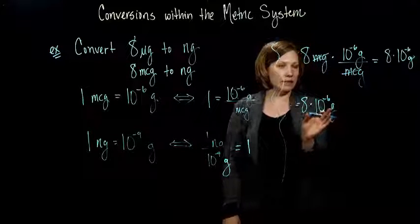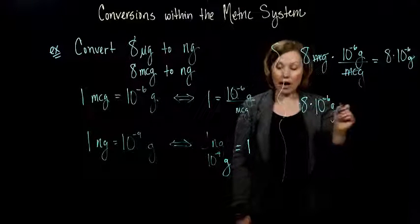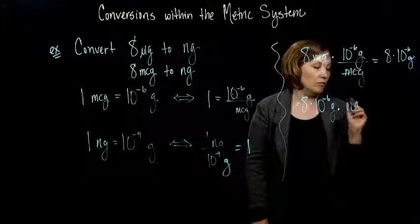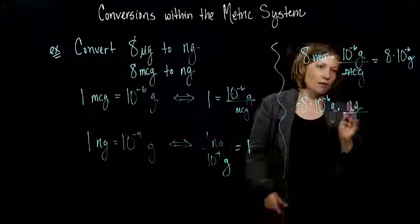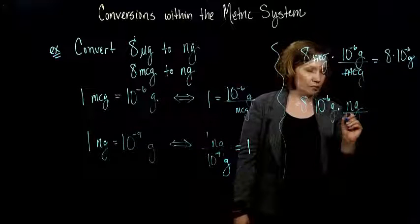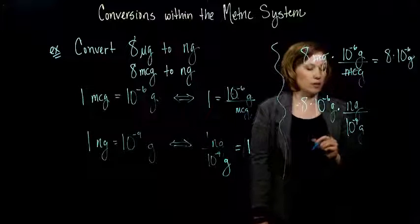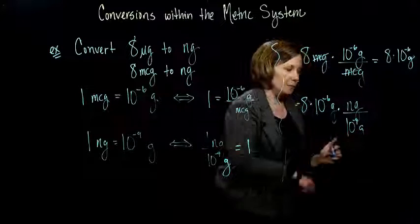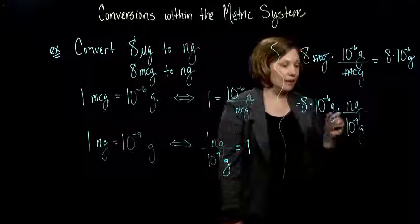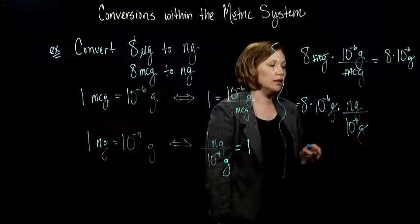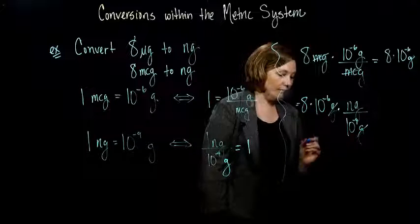My 8 times 10 to the negative 6 grams, I can multiply it by nanogram, 1 nanogram. I'm going to leave the 1 off, if that's alright, times over 10 to the 9 grams. Well, why did I do that? What's going to happen to my grams? Yep, they cancel out. And so all I have to do now is the math.